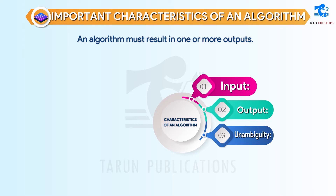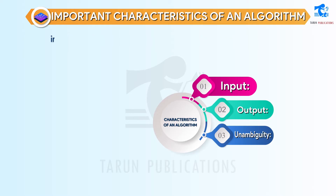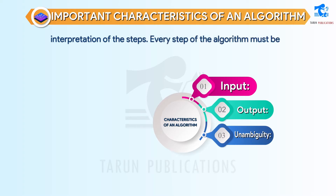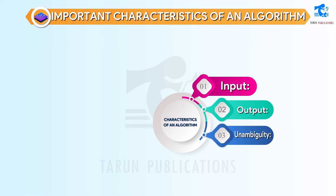Unambiguity: there should not be any other interpretation of the steps. Every step of the algorithm must be specified and the algorithm must follow the order of each step in the process.